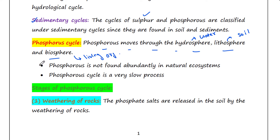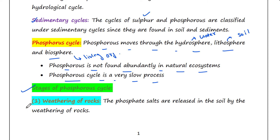Phosphorous is not found abundantly in natural ecosystems, and the phosphorous cycle is a very slow process. The first stage is the weathering of rocks, where phosphate salts are released into the soil by the weathering of rocks.